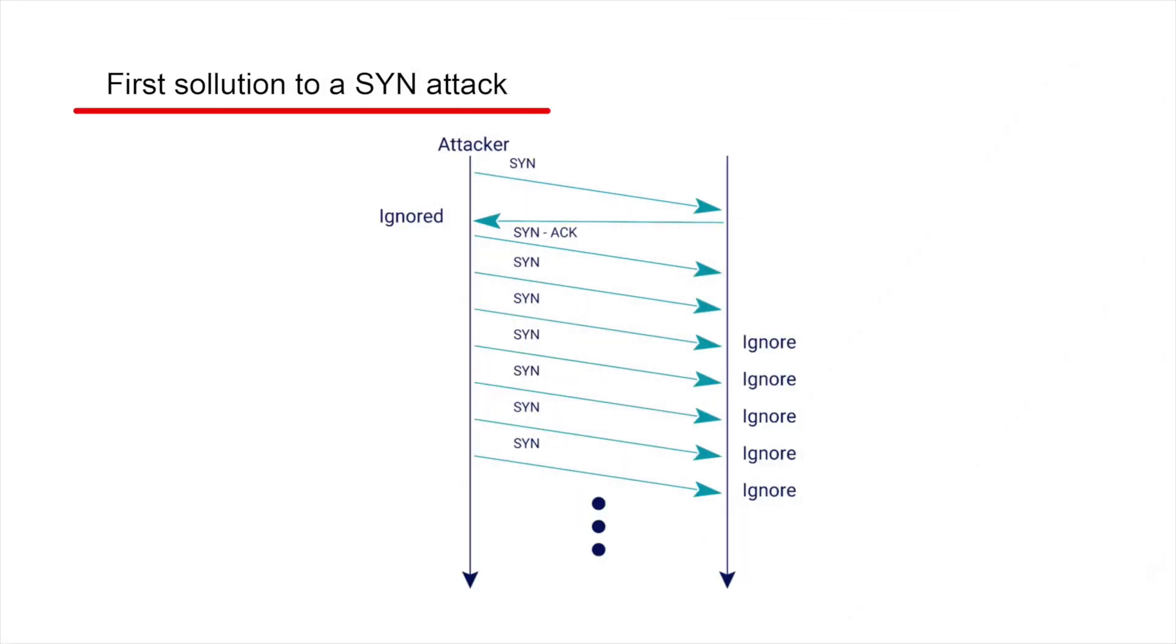How can we protect ourselves against the attack? A first solution to the SYN attack problem is simple. Limit the number of SYN requests that can come from a single IP. In this diagram, the number of open SYN requests from the same IP is limited to 3, so the first 3 requests will be answered by the server, but it will ignore the rest, meaning that it won't allocate memory for them. This way, it will never reach a crash state due to memory use.